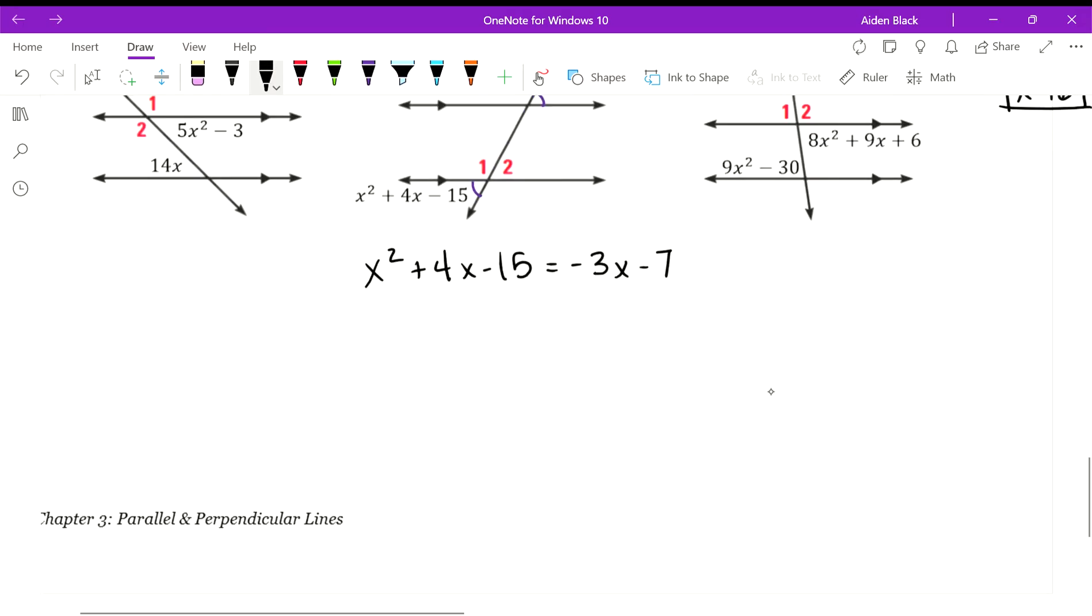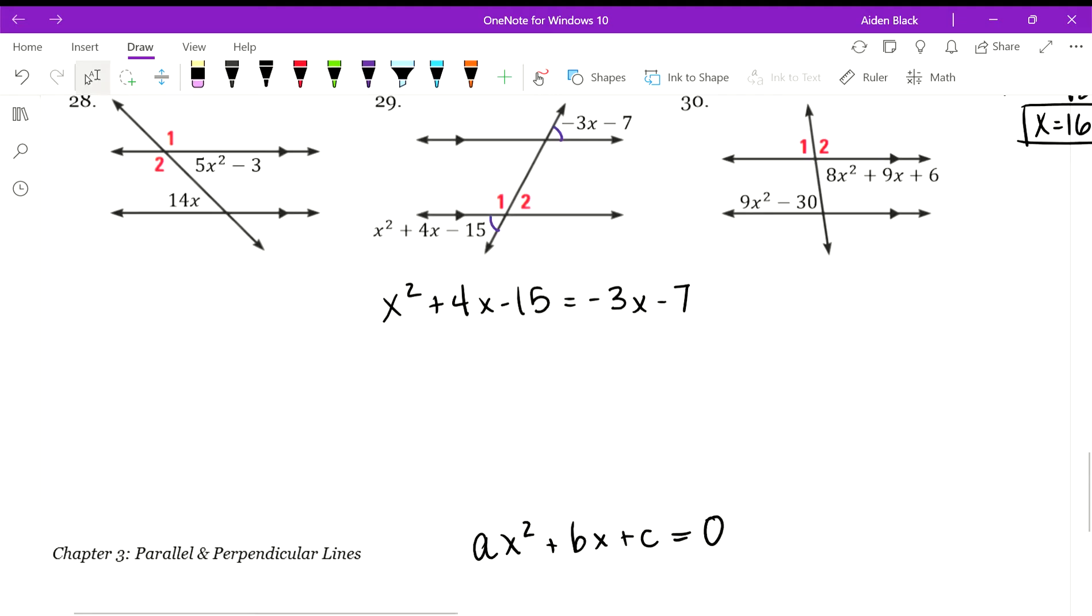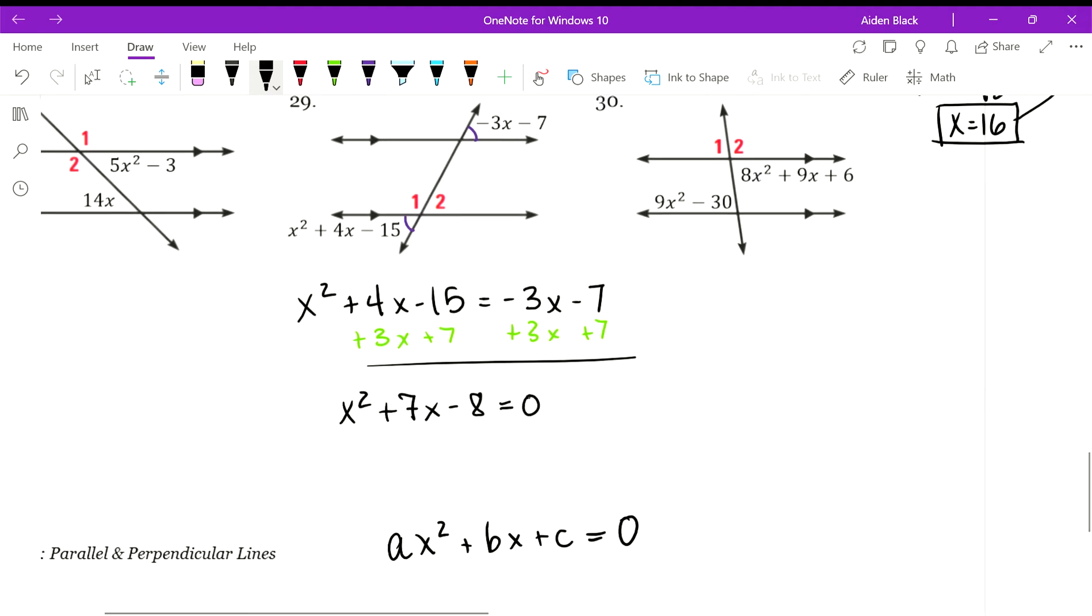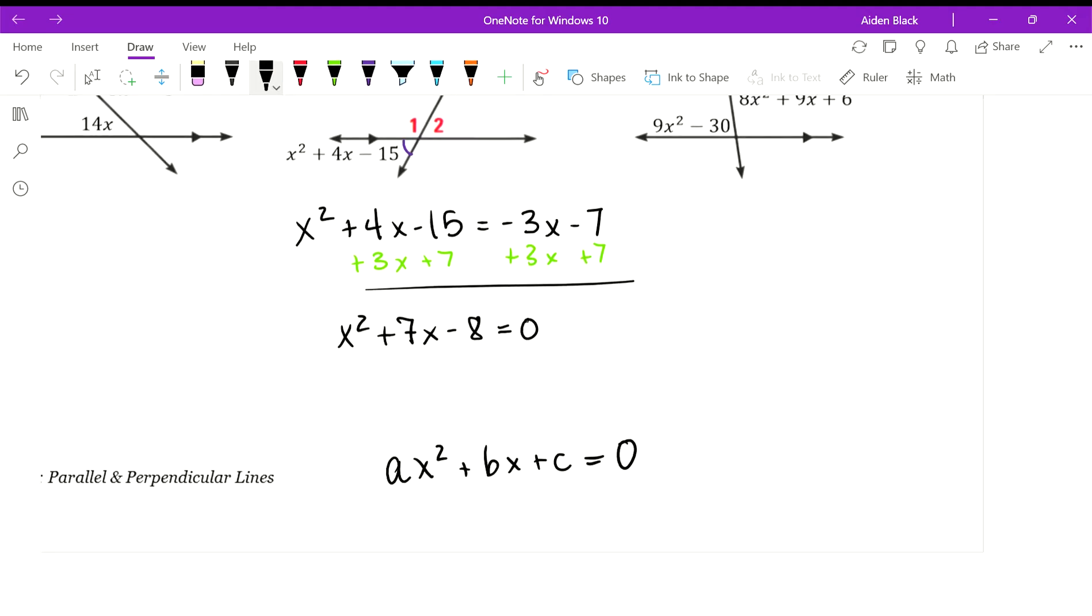Now I showed you earlier this is what a quadratic looks like, so this is the form we need to write it in. To do that, we can add 3x to both sides and we'll add 7 to both sides. So we get x²+7x-8=0. Now that we have it in that form, we have really two options.